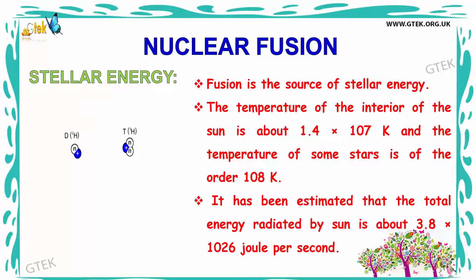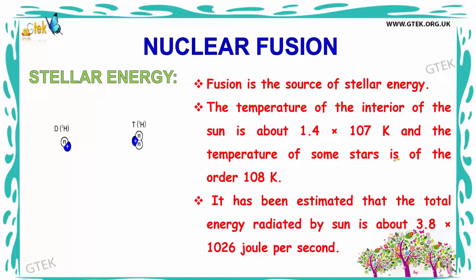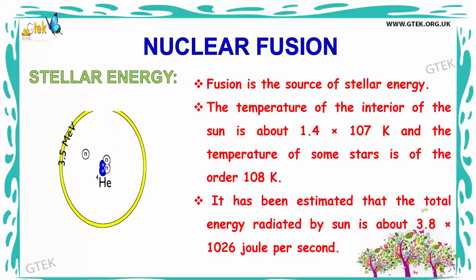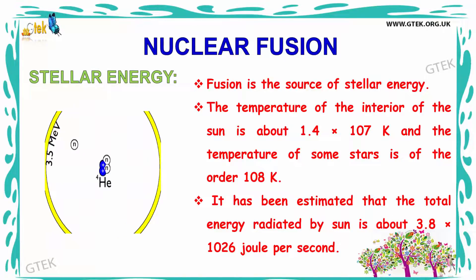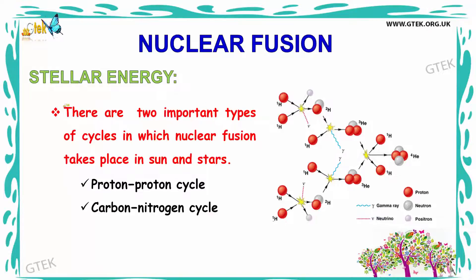Now let us see about stellar energy. Fusion is the process of stellar energy. The temperature of the interior of the sun is about 1.4 × 10⁷ Kelvin, and the temperature of some stars is of the order of 10⁸ Kelvin. It has been estimated that the total energy radiated by the sun is about 3.8 × 10²⁶ Joules per second. There are two important types of cycles in which nuclear fusion takes place in the sun and stars: the proton-proton cycle and the carbon-nitrogen cycle.